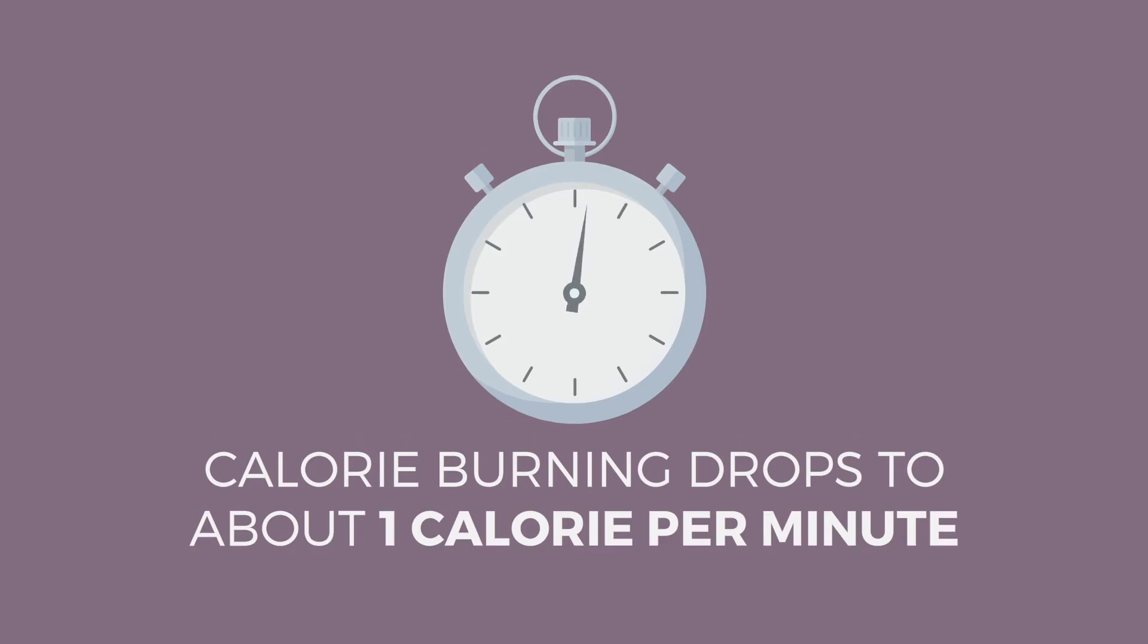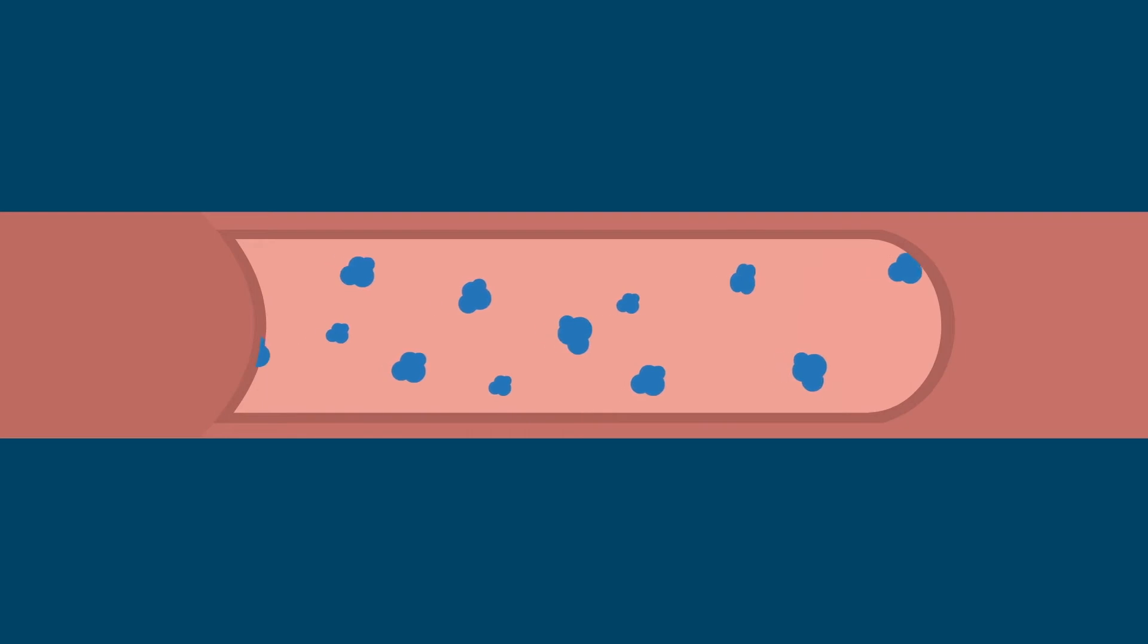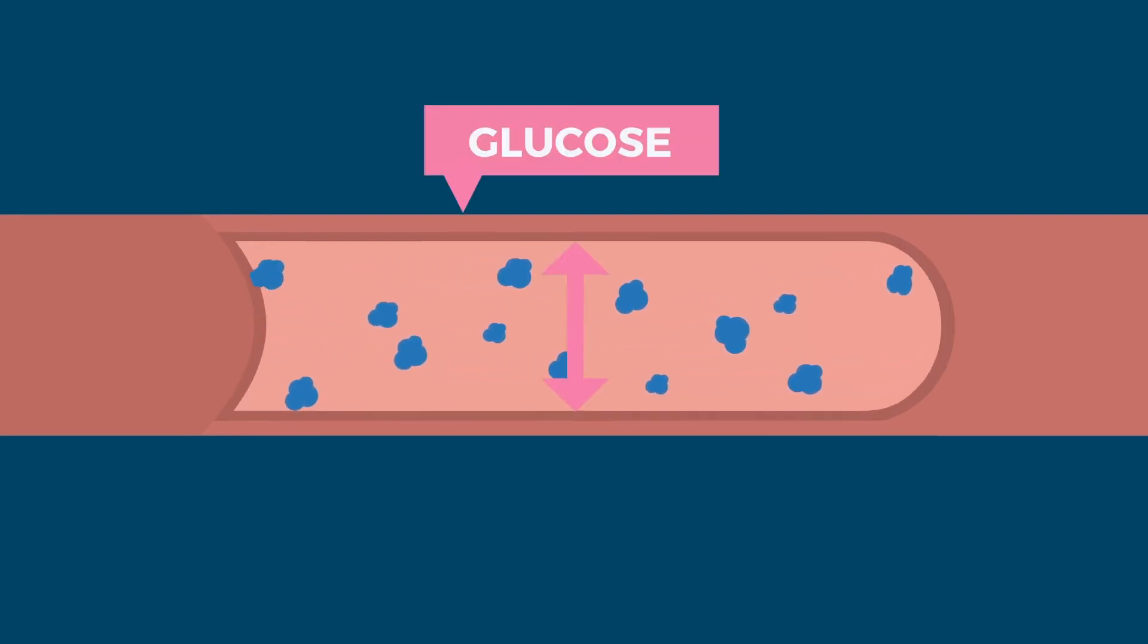In fact, calorie burning drops to about 1 calorie per minute. This slowing of your metabolism also affects your body's ability to regulate blood sugar and blood pressure levels.